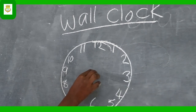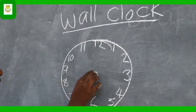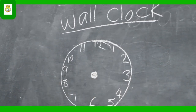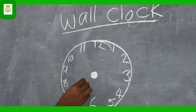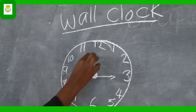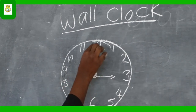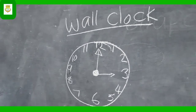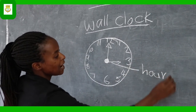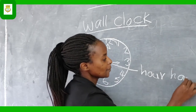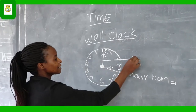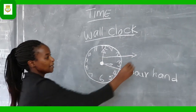So what we are going to do is that we are going to have hands. On the clock, we have two hands. We have one which is a short hand, and another which is a long hand. The short hand shows the hour, which we call the hour hand. And the long one indicates the minute hand.